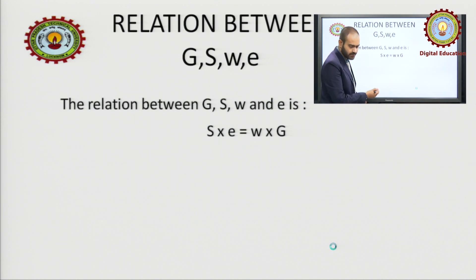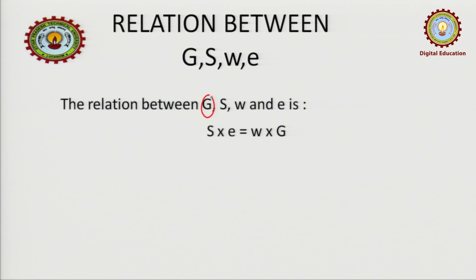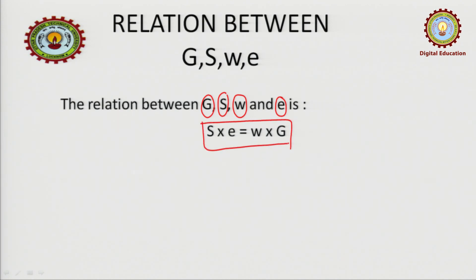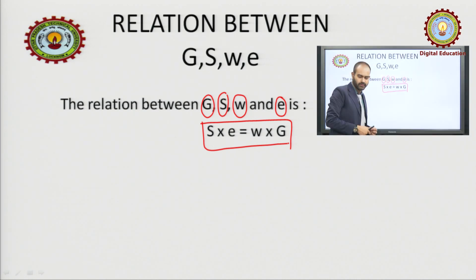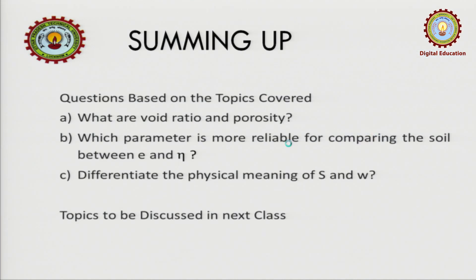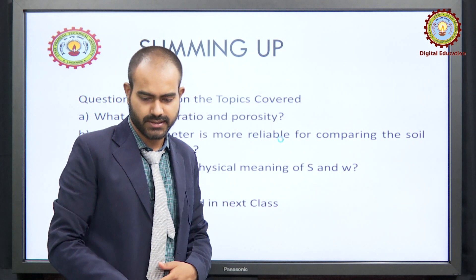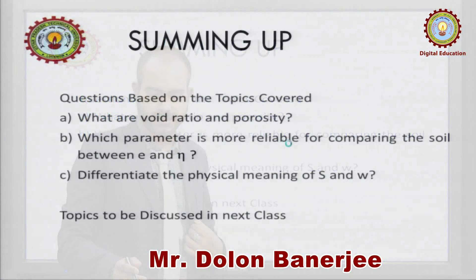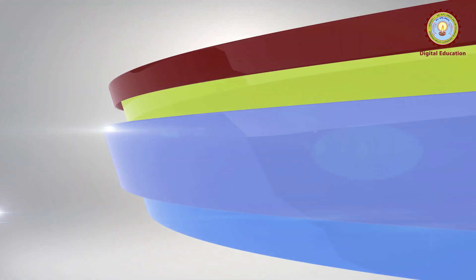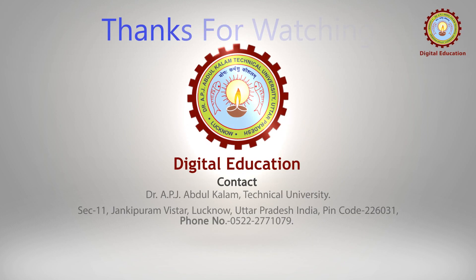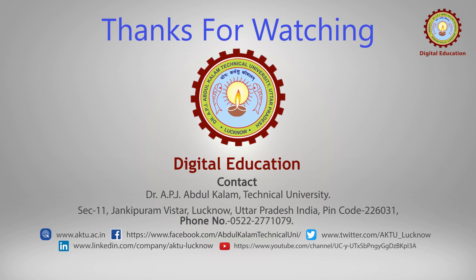An important relation: S times E equals W times Gs, where G is specific gravity, S is degree of saturation, W is water content, and E is void ratio. This is a very important relation we will use in numerous numericals. That concludes this session — we discussed specific gravity, dry density, and unit weight. There are some practice questions related to these topics. If there is any problem, you can revert back. Thank you.